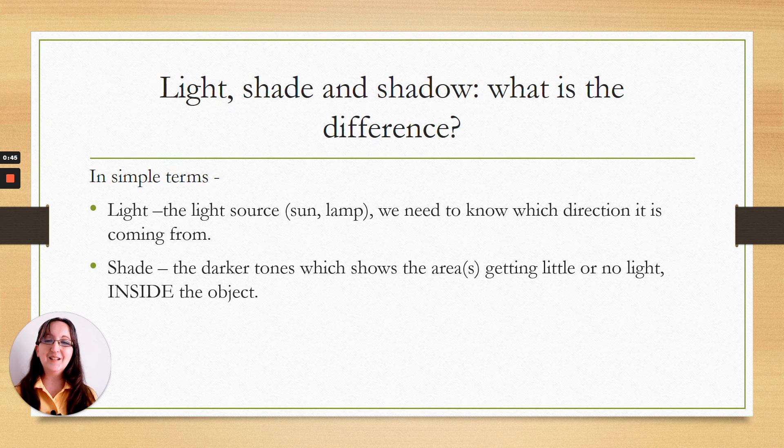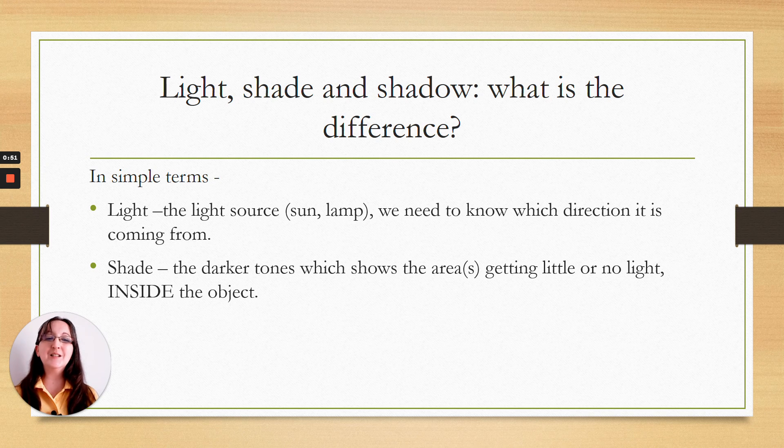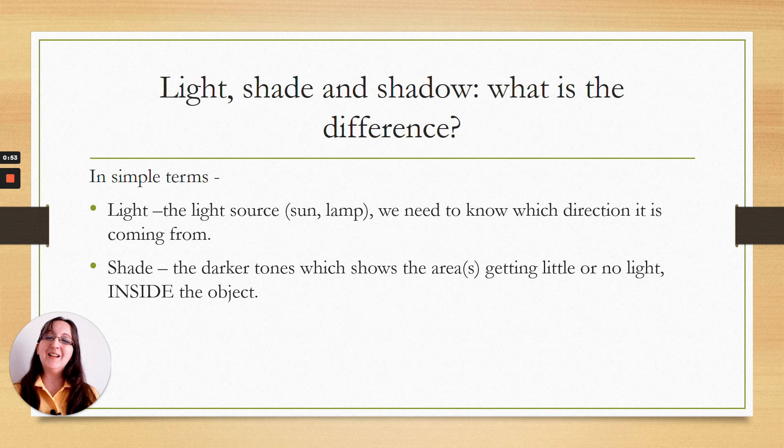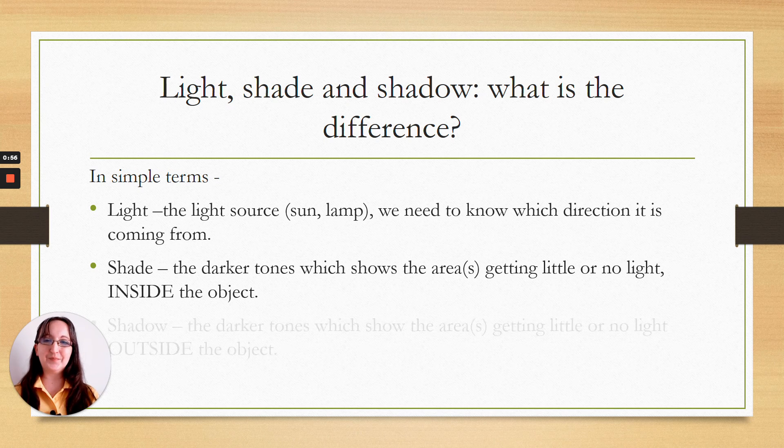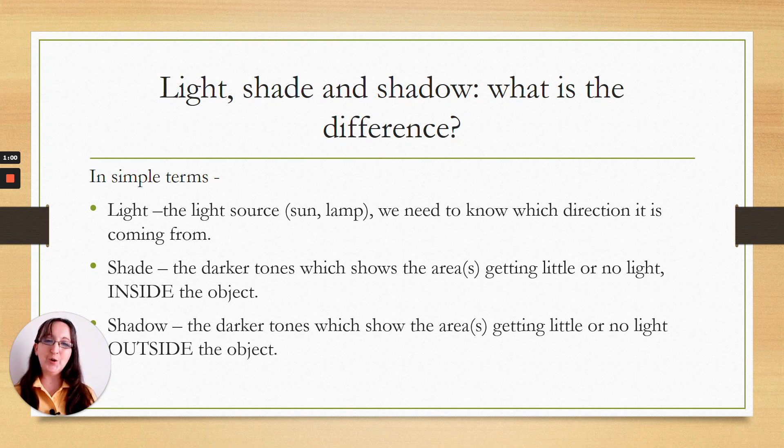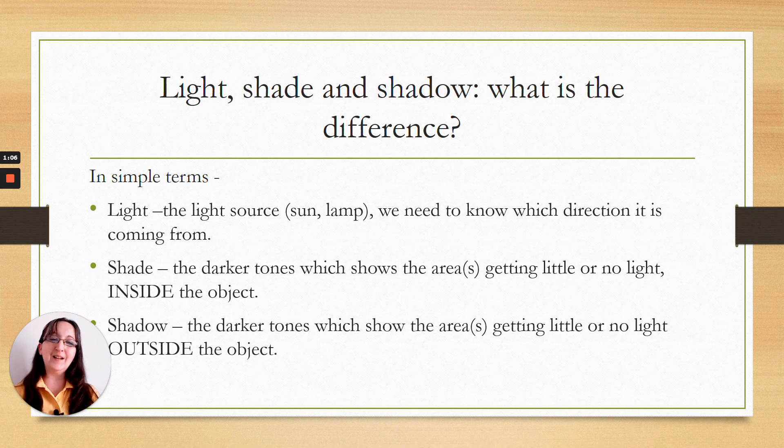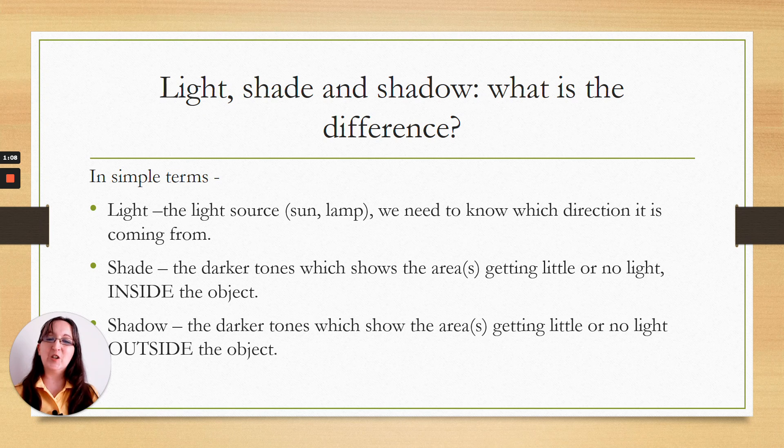Shade is the darker tones which show the area or areas getting little or no light inside the objects. And shadows is the darker tones which show the area or areas getting little or no light outside of the object. So shade is usually inside the object and shadow on the outside.